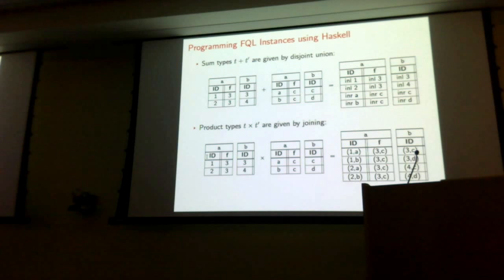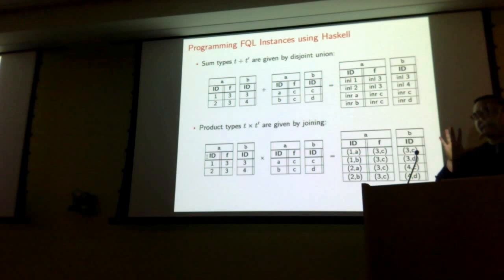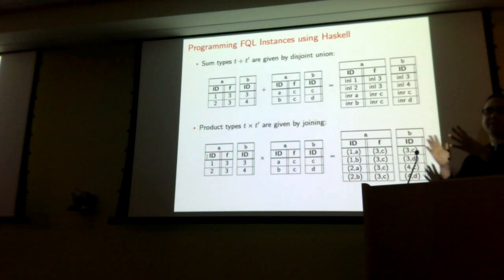Is there an operation that introduces a new foreign key for the schema? That is not something available in the core calculus I described here, but you can always construct a mapping from the schema without the foreign key to the schema with the foreign key, and then use the delta, sigma, pi operations to move your data to and from.